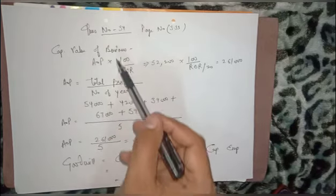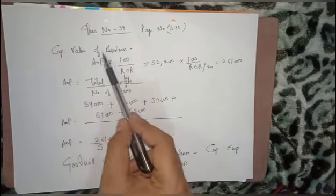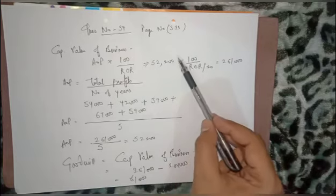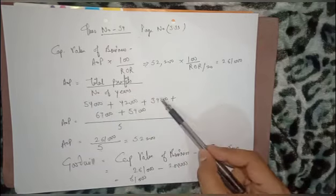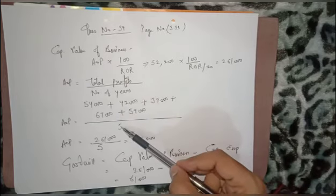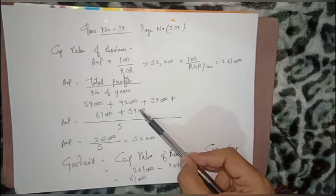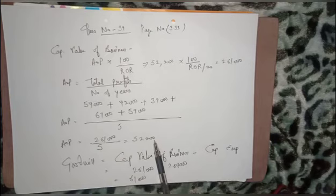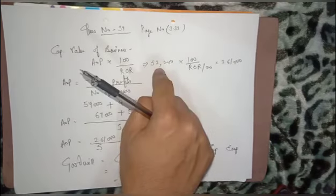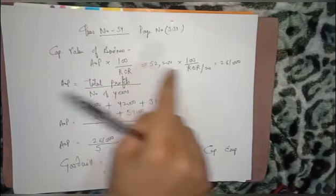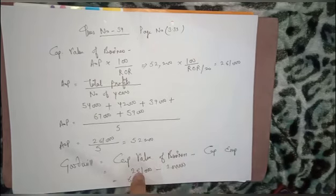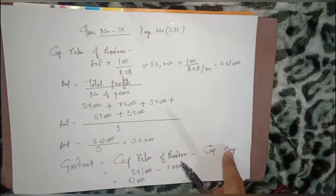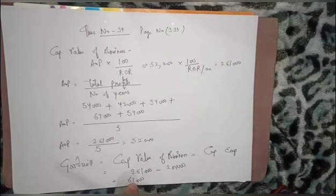To summarize: to capitalize average profits, first calculate the capitalized value of the business using Average Profit × 100 ÷ Rate of Return. Since average profit was not directly given, we calculated it as Total Profits ÷ Number of Years (5 years). The average profit was 52,200, giving a capitalized value of 2,61,000. Subtracting capital employed (net assets of 2,00,000) gives goodwill of 61,000.